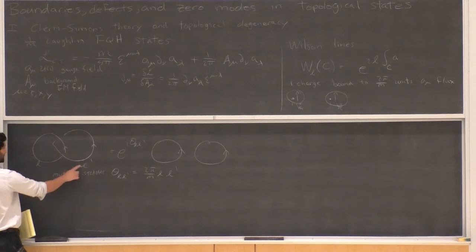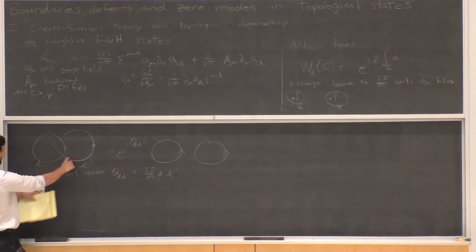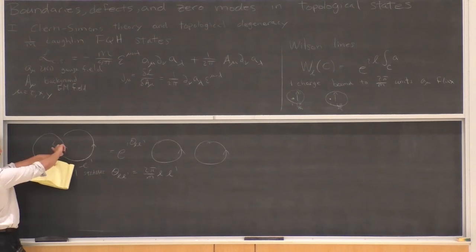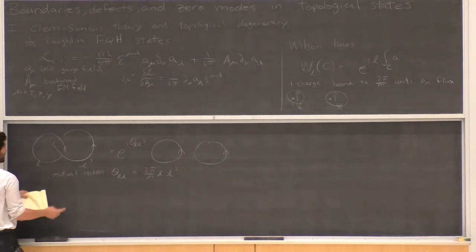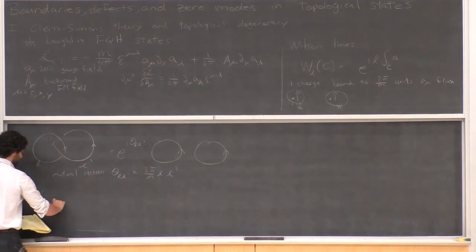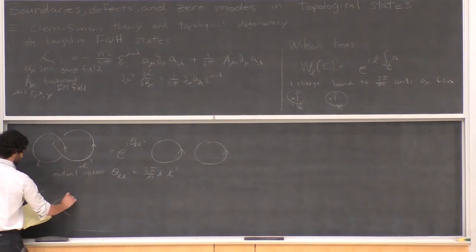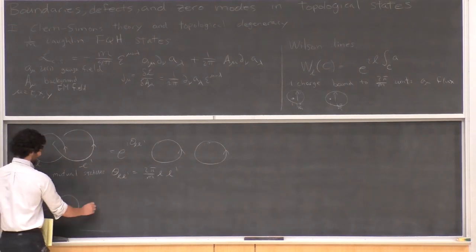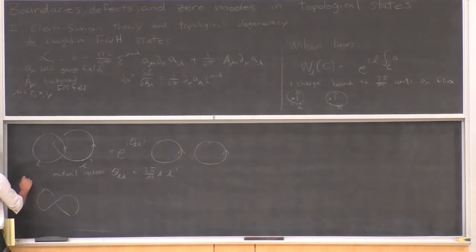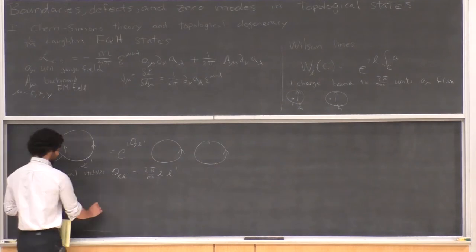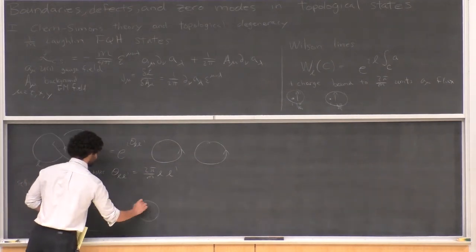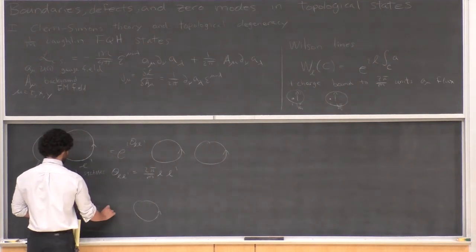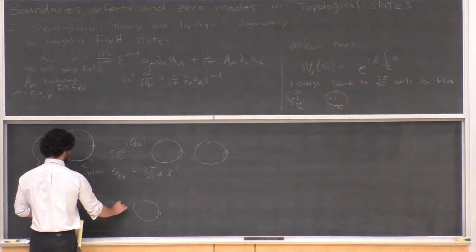If these were the same quasiparticle, you could consider them just exchanging once. This gives you the self-statistics of the particle. Comparing the exchange process to the non-exchange process gives a phase e^{iθ_L}, where θ_L = πL²/M. To actually compute this is a subtle matter — there are all kinds of regularizations you need to deal with, but it's something that can be done.